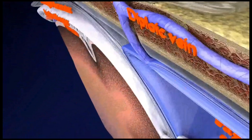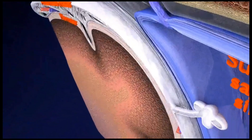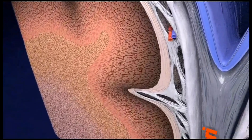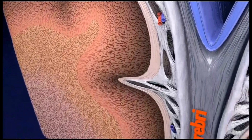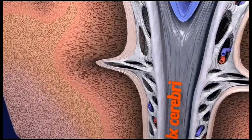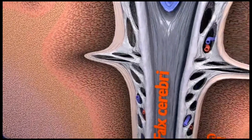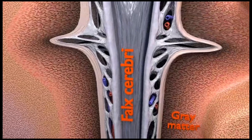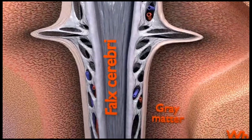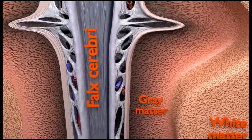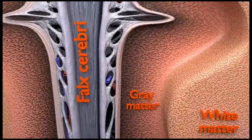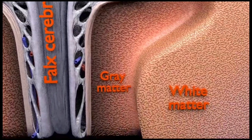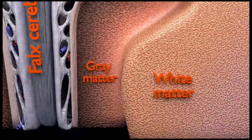The inner layer, the meningeal dura mater, lines the inside of the entire skull and creates little folds on the brain surface. It is continuous with the dura mater of the spinal cord. Two such special folds are called the falx and the tentorium. The falx separates the right and left half of the brain, and the tentorium separates the upper and lower parts of the brain.